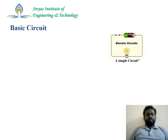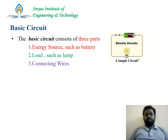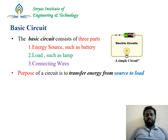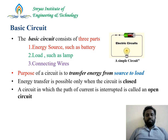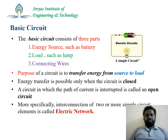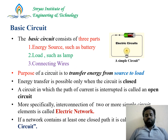What basically is a circuit? A basic circuit consists of three parts: the source, the load, and connecting wires. The purpose of a circuit is to transfer energy from source to load, and energy transfer is only possible when the circuit is closed. There are two types: open circuit and closed circuit. A circuit in which the path of current is interrupted — meaning there is no flow of charge carriers — is called an open circuit. More specifically, an interconnection of two or more simple elements is called an electrical network, and if a network has at least one closed path it is called a circuit.